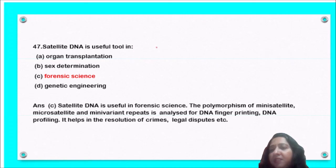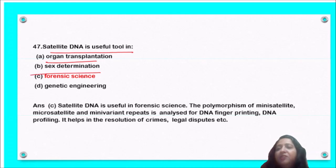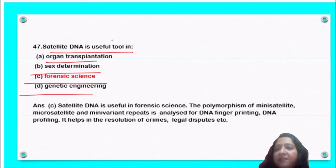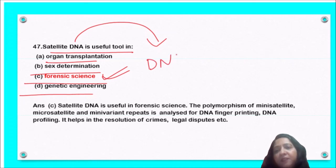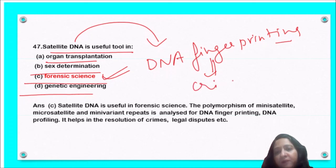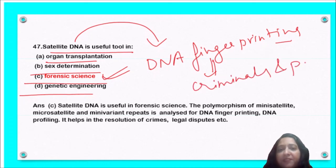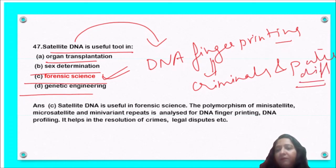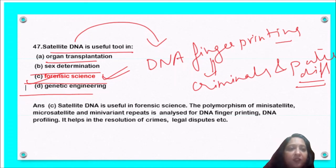Next question: satellite DNA is a useful tool in organ transplantation, sex determination, forensic science, or genetic engineering? Satellite DNA is widely used in forensic science and in DNA fingerprinting, which is used to identify criminals and determine paternity. So option C, forensic science, is the correct answer.